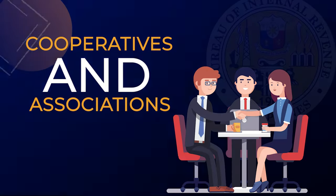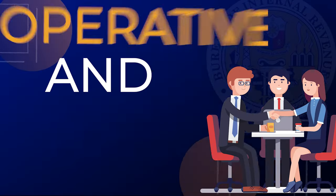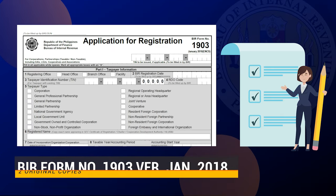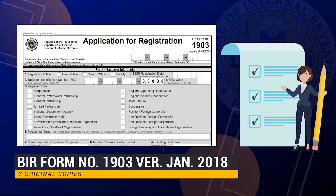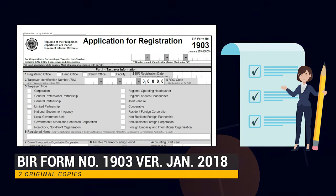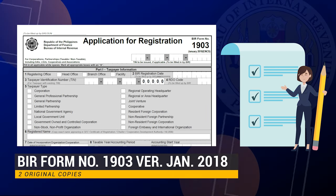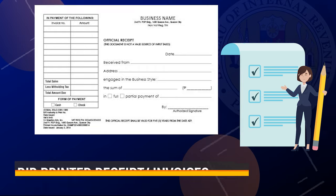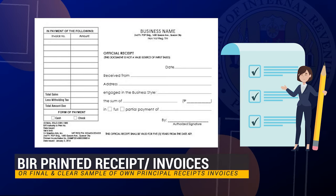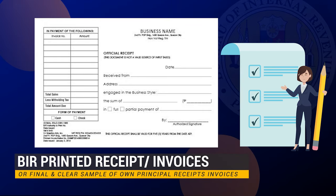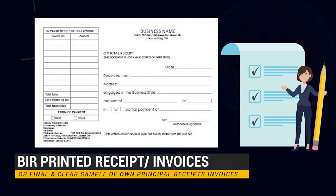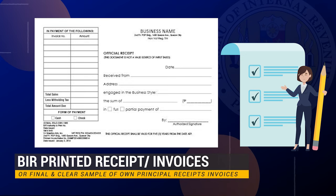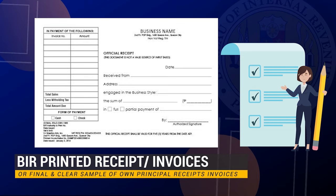For cooperatives and associations, No. 1: BIR Form No. 1903, version January 2018, two original copies. No. 2: BIR Printed Receipts or Invoices, or Final and Clear Sample of Own Principal Receipts or Invoices.